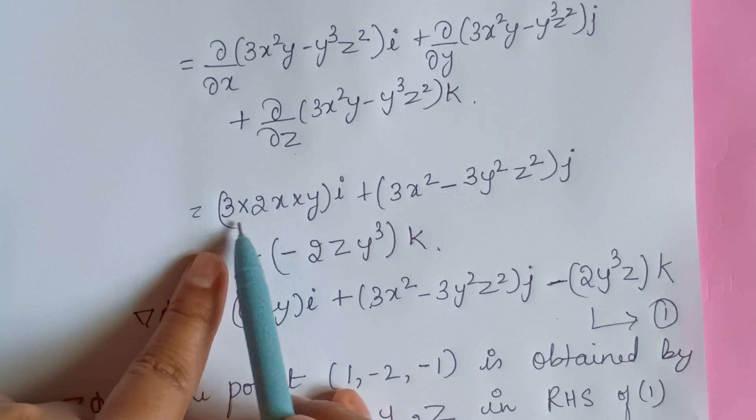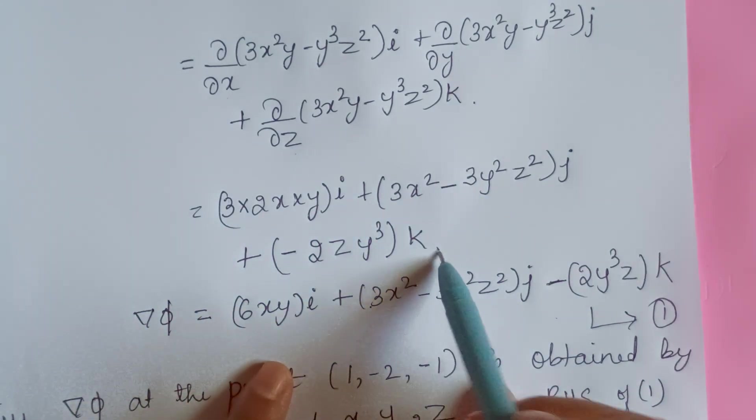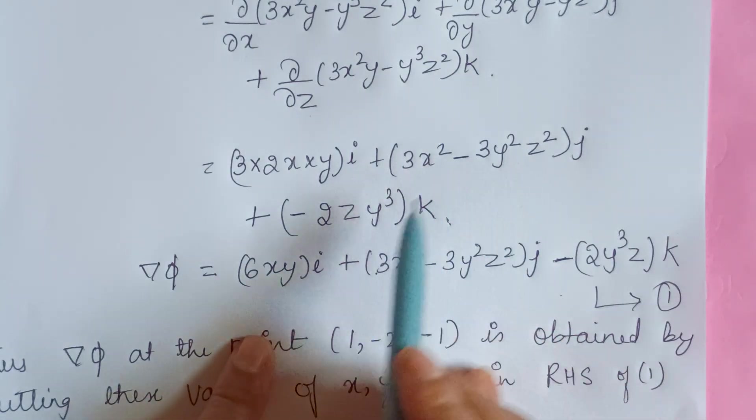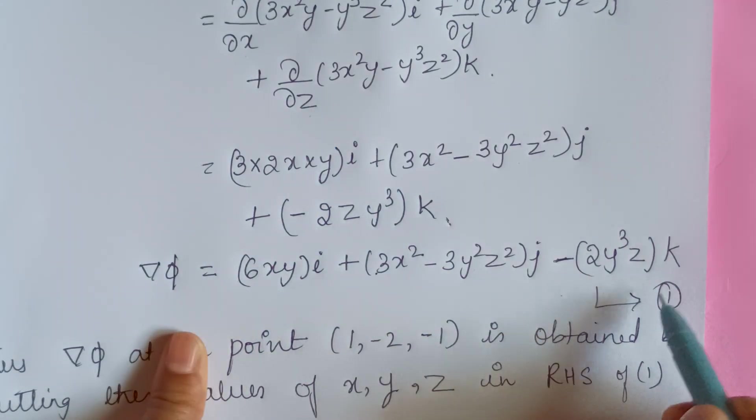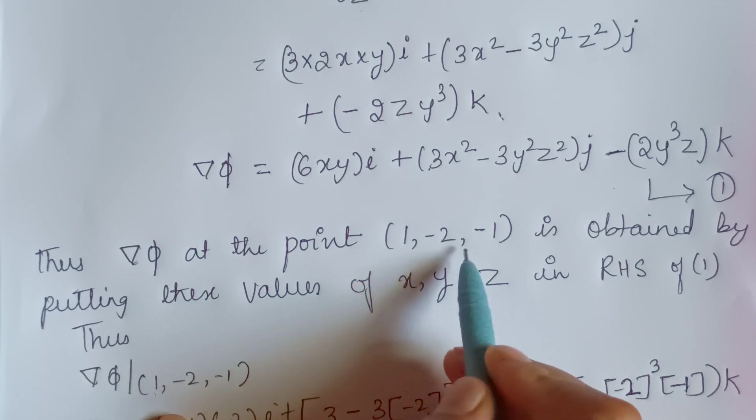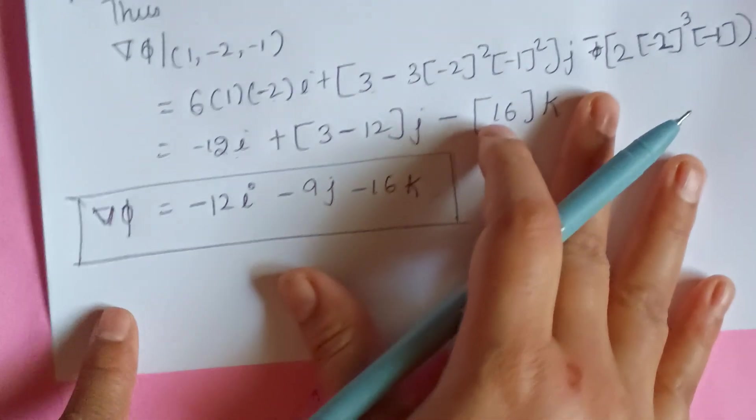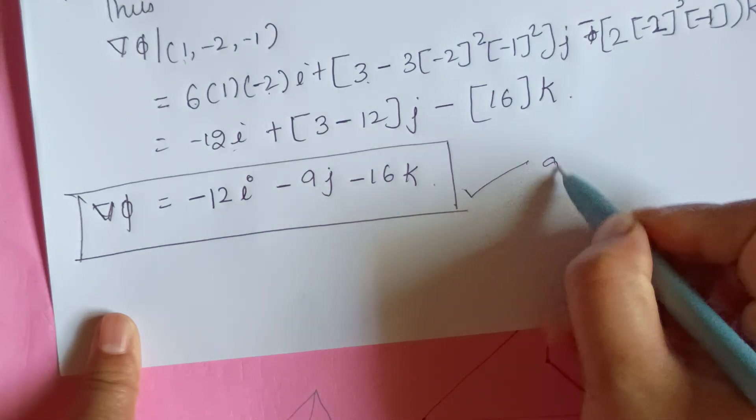This is partially differentiated by x. We will get 3 × 2x × y i. Similarly, this step partially differentiated with respect to y and z. So after simplifying this we get this equation. In this equation I have simply substituted this point (1, -2, -1), so after substituting that finally I found the grad phi.